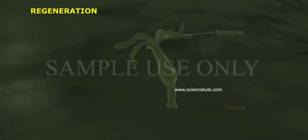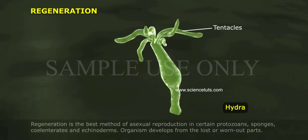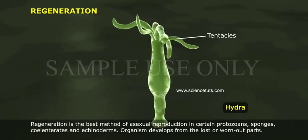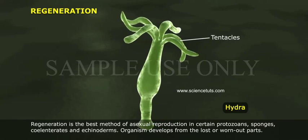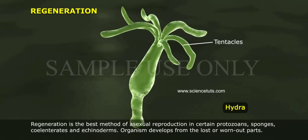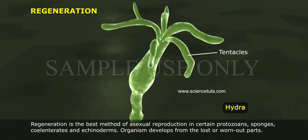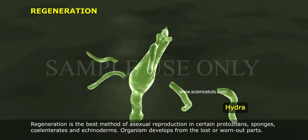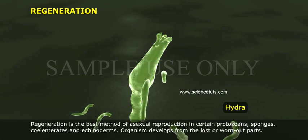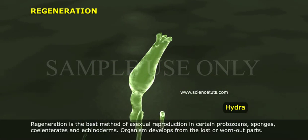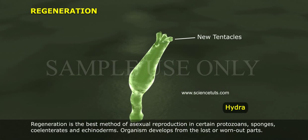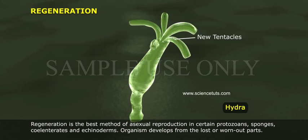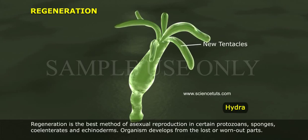Regeneration is the best method of asexual reproduction in certain protozoans, sponges, cylindrates, and echinoderms. The organism develops from the lost or worn-out parts.